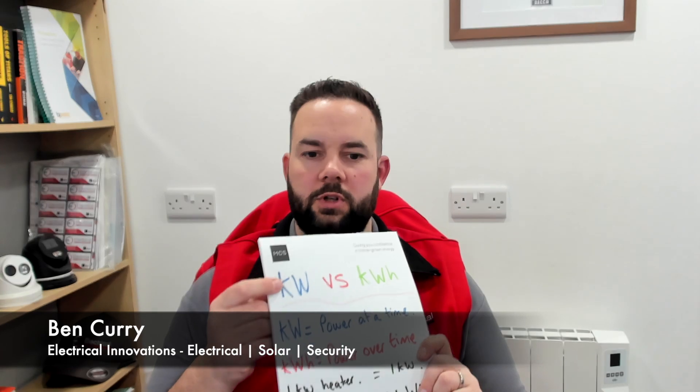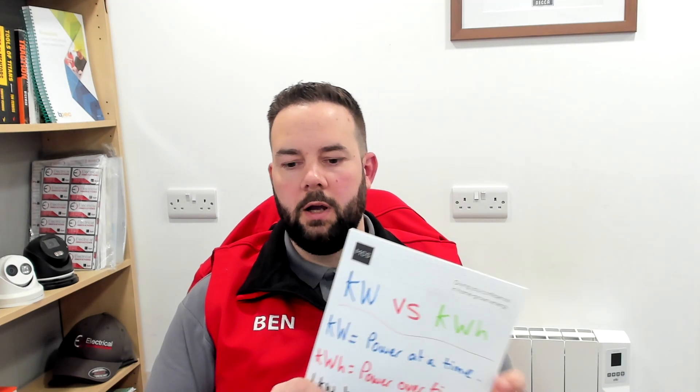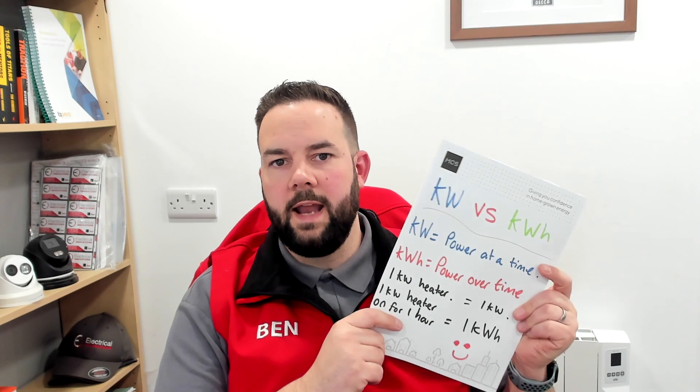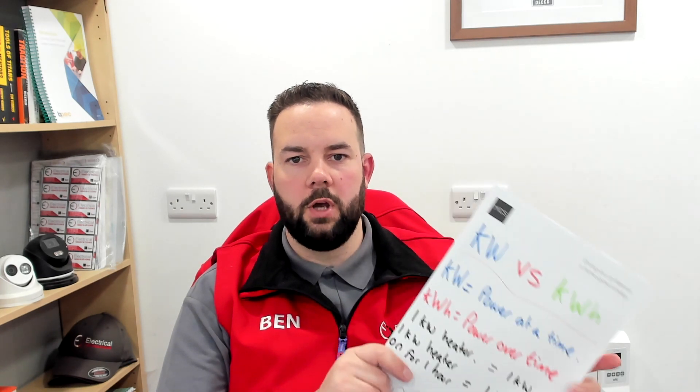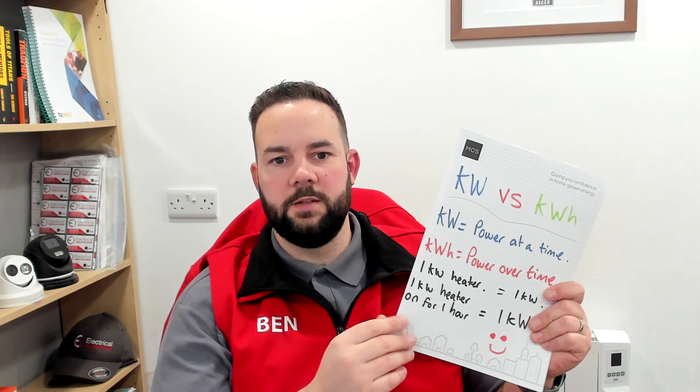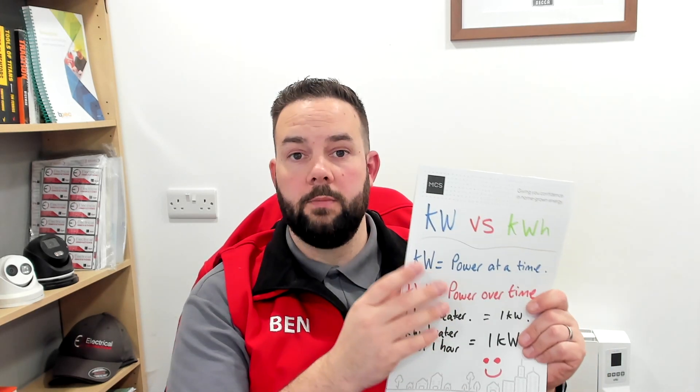In simple terms a kilowatt is a measure of power — it might be something like an appliance: a hairdryer, a solar panel, a tumble dryer, anything like that — and it's the amount of energy it uses at once. Whereas a kilowatt hour is a measure of what energy has been used over time. Engineers out there will probably pull me up on all of this but this is simplest terms so it's easy to understand.